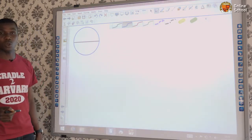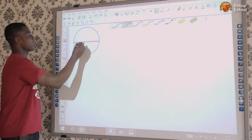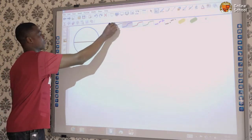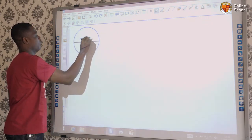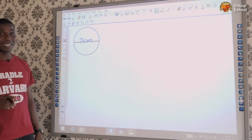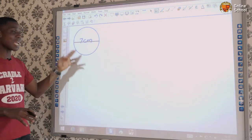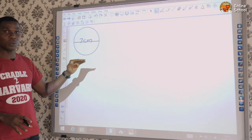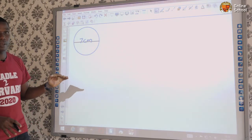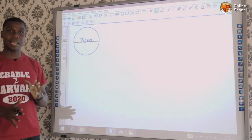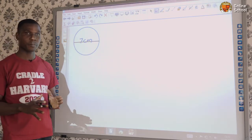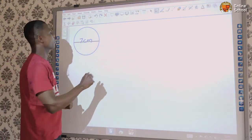This is the diameter. We can still pick 7 as radius. This time around, it is not the radius that is 7. It is the diameter that is 7 cm. Remember that there is a relationship between diameter and radius.